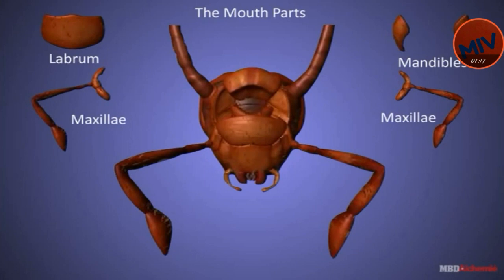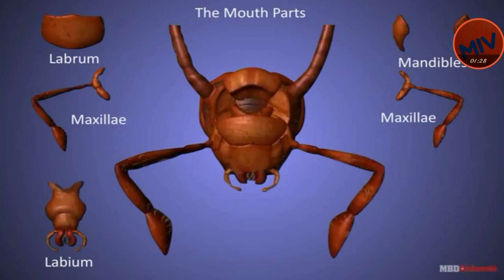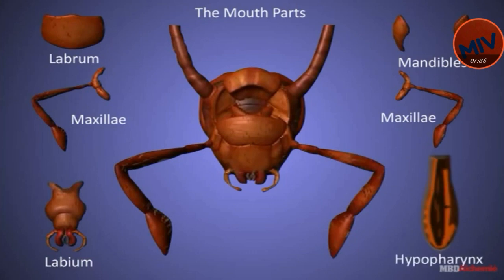Maxillae lie below the mandible. Each maxilla is biramous. Labium is a broad plate and forms the posterior margin of the pre-oral cavity, so it is called the lower lip. Hypopharynx is called lingua or tongue. The common salivary duct opens at its base.